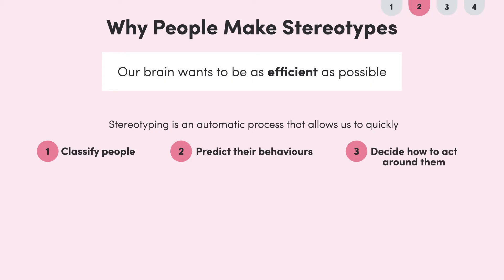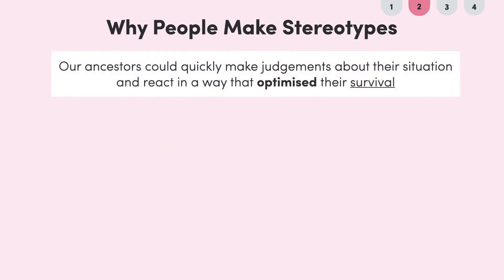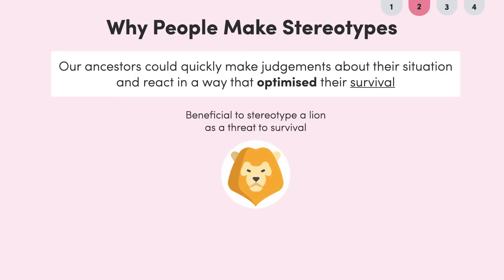The psychology behind stereotypes evolved in our brains so that our ancestors could quickly make judgments about their situation and react in a way that optimized their survival. For example, if they saw a lion, it was beneficial for them to stereotype that lion as a threat to their survival.